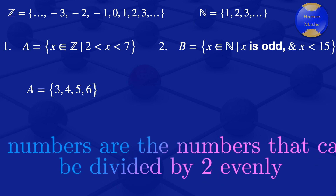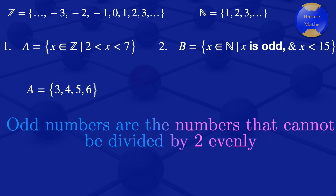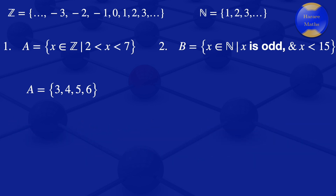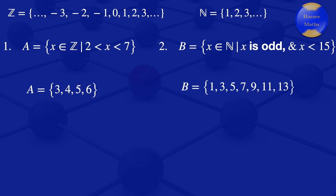Odd numbers are numbers that cannot be divided by two evenly. So we look for natural numbers that cannot be divided evenly by two and are also less than 15. Those numbers are 1, 3, 5, 7, 9, 11, and 13. So set B equals {1, 3, 5, 7, 9, 11, 13}.